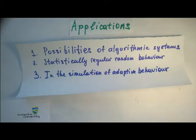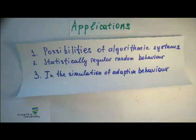Intensive development of the theory of probabilistic automata in the 60s-70s of the last century created several types of applications. Schemes of probabilistic automata are applied to determine the possibilities of algorithmic systems, in the design of discrete systems displaying statistically regular random behavior, and in the simulation of adaptive behavior, for example, robots and living organisms.